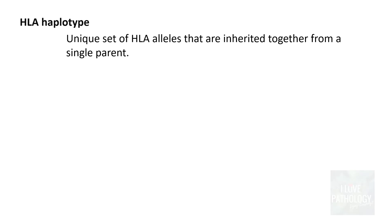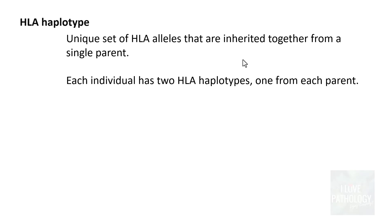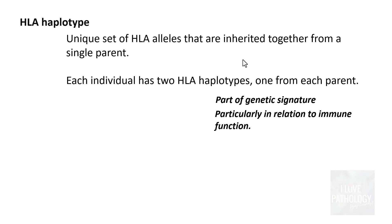Let us now understand the concept of HLA haplotype. An HLA haplotype is a unique set of HLA alleles inherited together from a single parent. Each individual has two HLA haplotypes — one inherited from the father and one from the mother. This combination of two HLA haplotypes forms part of an individual's genetic signature and is very important in relation to immune function.